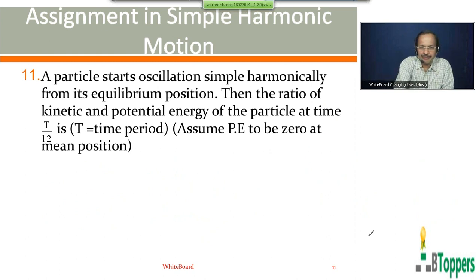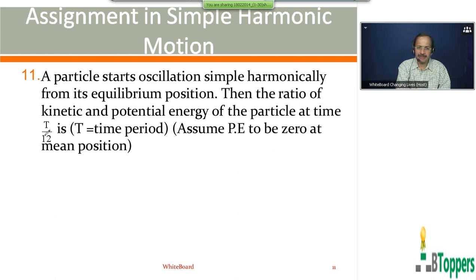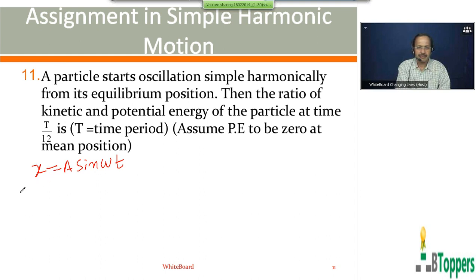To find the ratio of kinetic and potential energy at the given instant, you need to know the distance of the particle from the equilibrium position at that instant. If we start counting time from the instant the particle passes the mean position in the positive direction, then the displacement from mean position at time t is given by x equal to A sin(omega·t). Setting t equal to T/12, we get y equal to A sin(2π/T · T/12) = A sin(π/6). Since π/6 radians is 30 degrees and sin(30°) = 1/2, we get y = A/2.